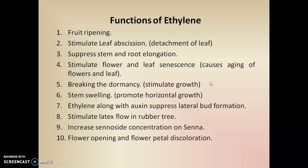The second function of ethylene is that it stimulates leaf abscission — that is, it is responsible for detachment of the leaves. It also suppresses stem and root elongation, inhibiting the growth of stems as well as roots. It stimulates flower and leaf senescence, meaning it causes aging of flowers and leaves. It also shows breaking of dormancy and is responsible for stem swelling, promoting horizontal growth of the plant. Ethylene, along with auxin, suppresses lateral bud formation and inhibits lateral bud development.